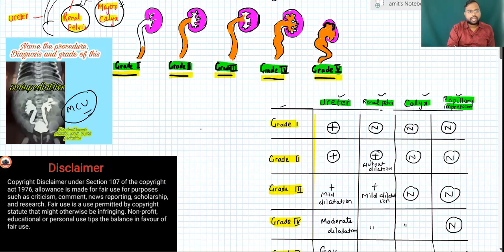Grading is important because treatment is decided based on it. In Grade 1, the retrograde flow of urine goes up to the ureter only. The renal pelvis, calyxes, and papillary impression remain normal.